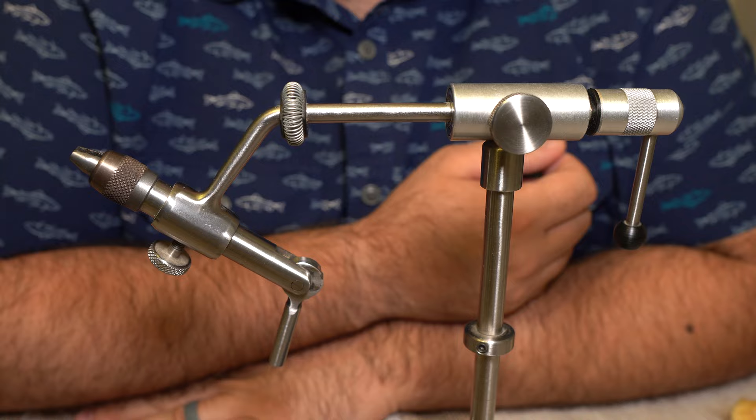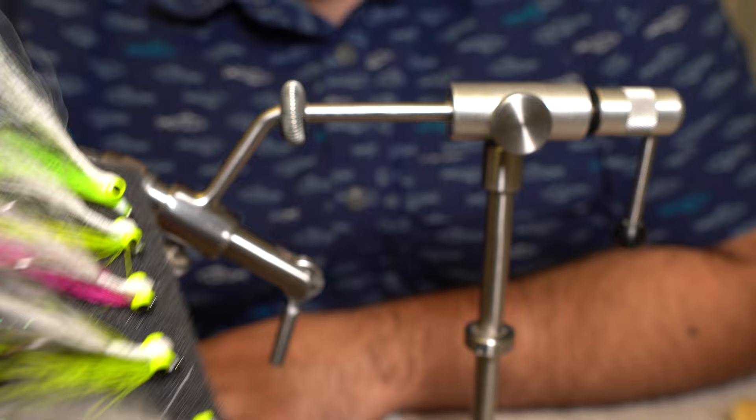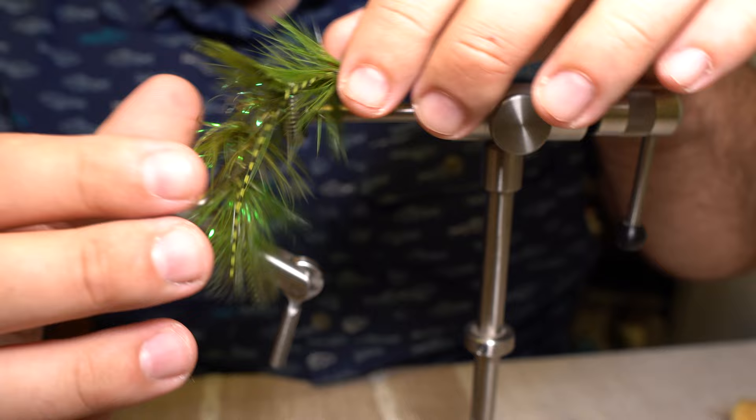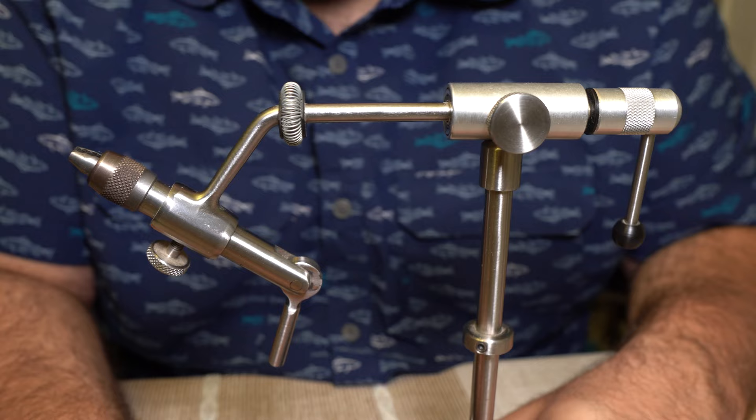These are all 1-aughts, everything I'm tying right now. I tie lots of bass flies, articulated stuff. I tie big flies more often than not. So that is one thing that really put me off about Regal when I started looking at them.